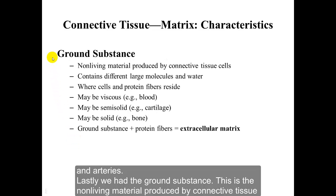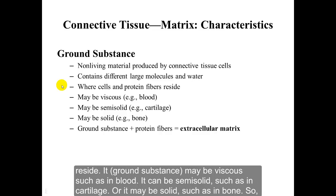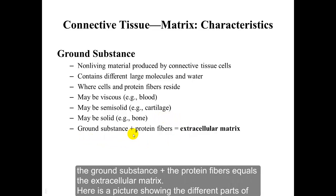Lastly, we have the ground substance. This is the non-living material produced by connective tissue cells. It contains many different large molecules and water. This is the site where the cells and the protein fibers reside. It may be viscous, such as in blood; semi-solid, such as in cartilage; or solid, such as in bone. The ground substance plus the protein fibers equal the extracellular matrix.